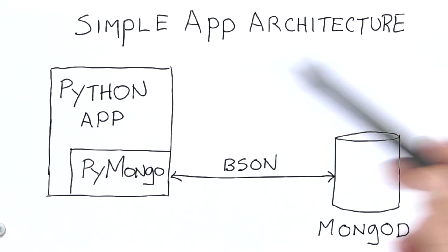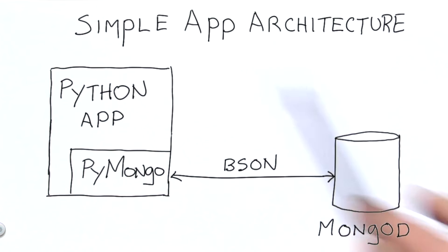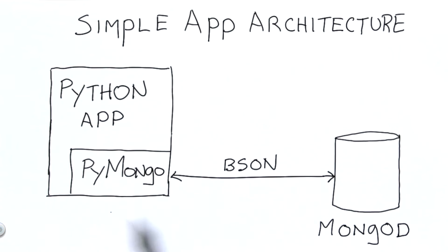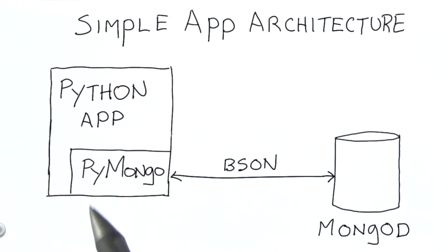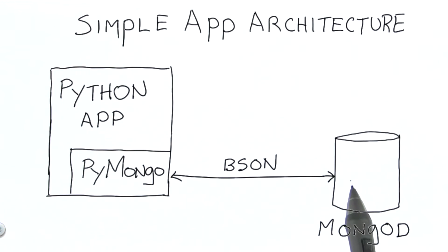If you download MongoDB and run it on your local computer, this picture basically represents the architecture. You'll start MongoDB, and the daemon that's running is MongoD. Then you'll create a Python application that includes the PyMongo module, and using the PyMongo module, you can send requests and receive responses from MongoDB.